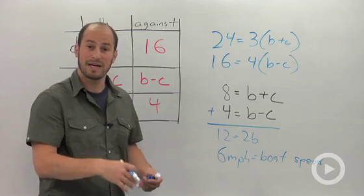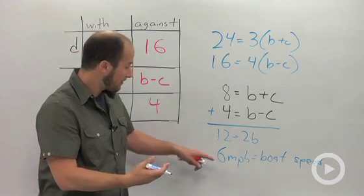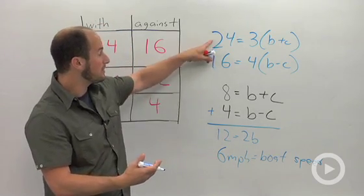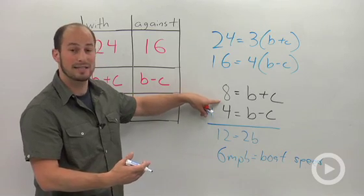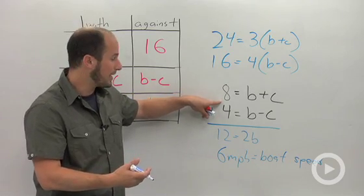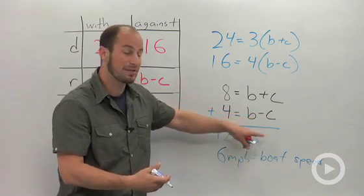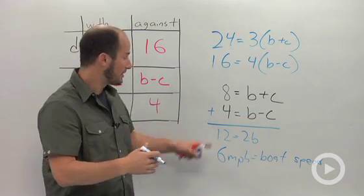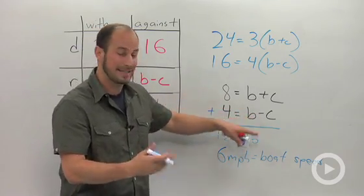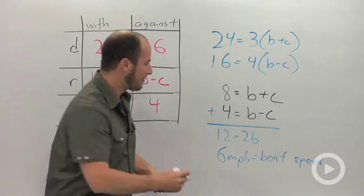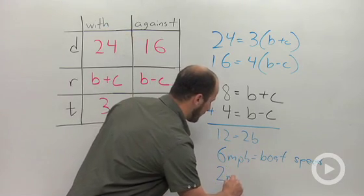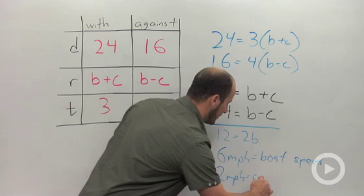Just like any system, when we find one answer, we plug it back in to find the other. We could plug 6 into any of these equations. These are actually the same exact thing because all we did was divide by a constant. So what we find here is 4 equals 6 minus C. I solved that step in my head. What we find is 2 miles per hour equals the current.